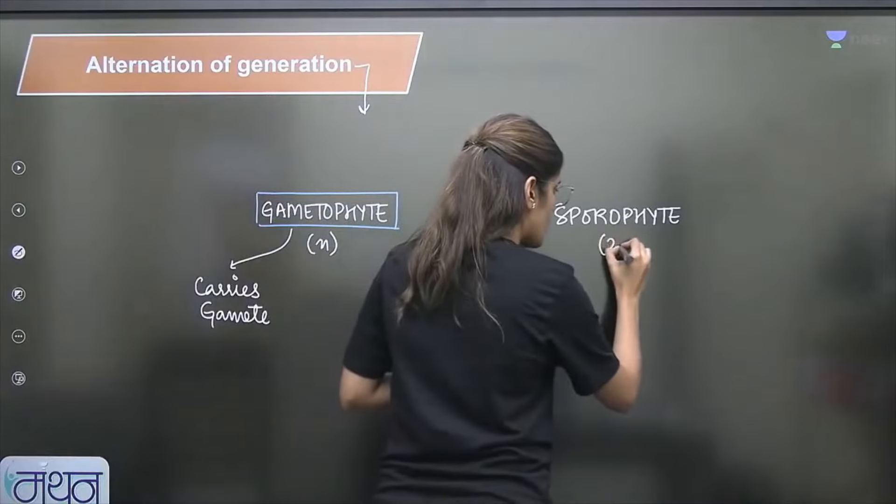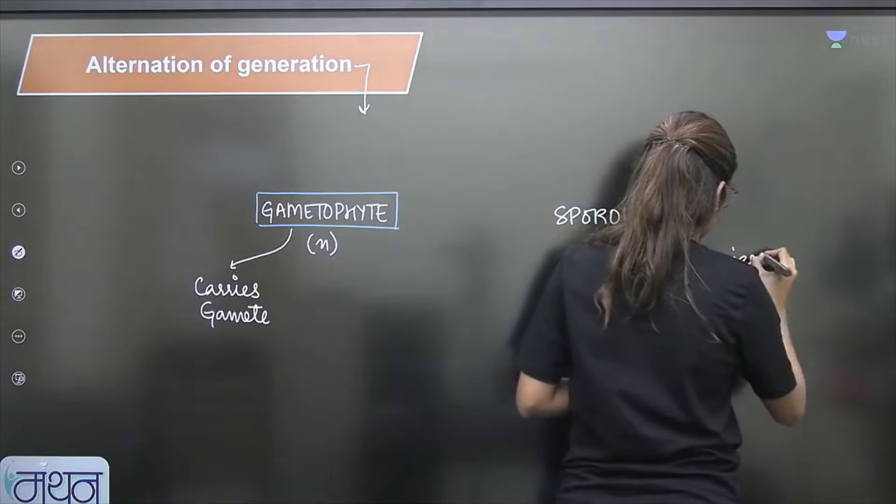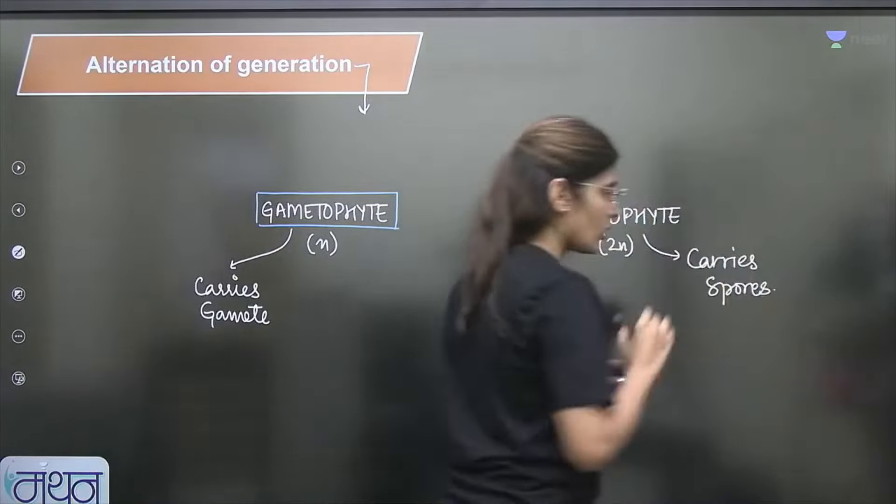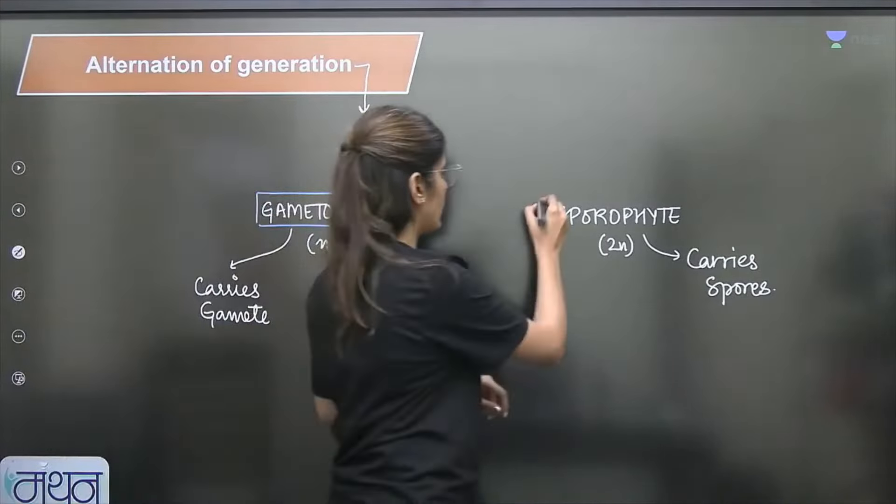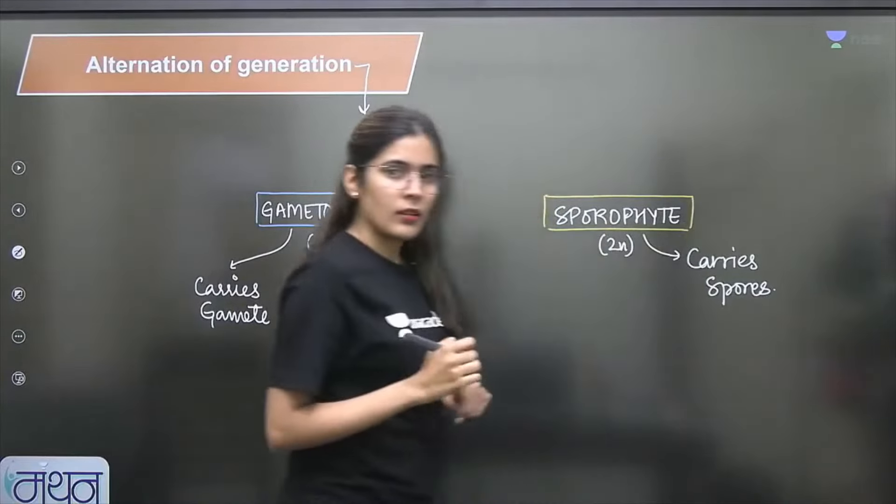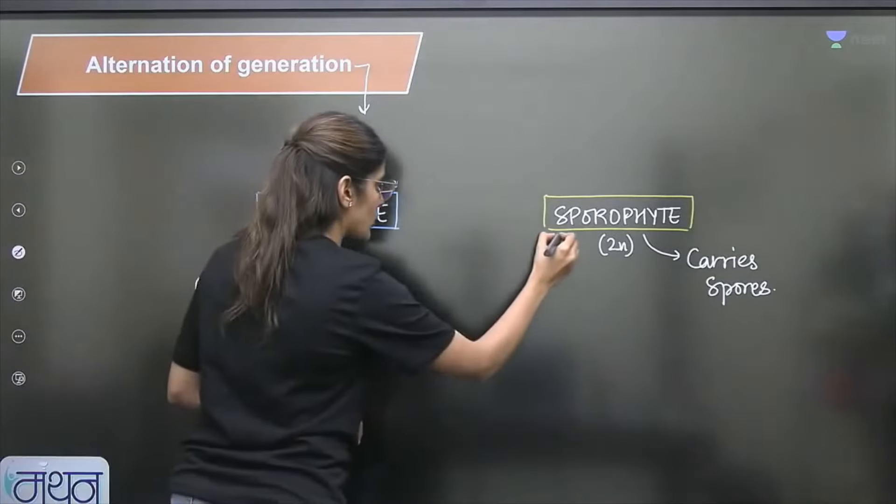Diploid structure that carries spore. The diploid structure carrying spores is the sporophyte.